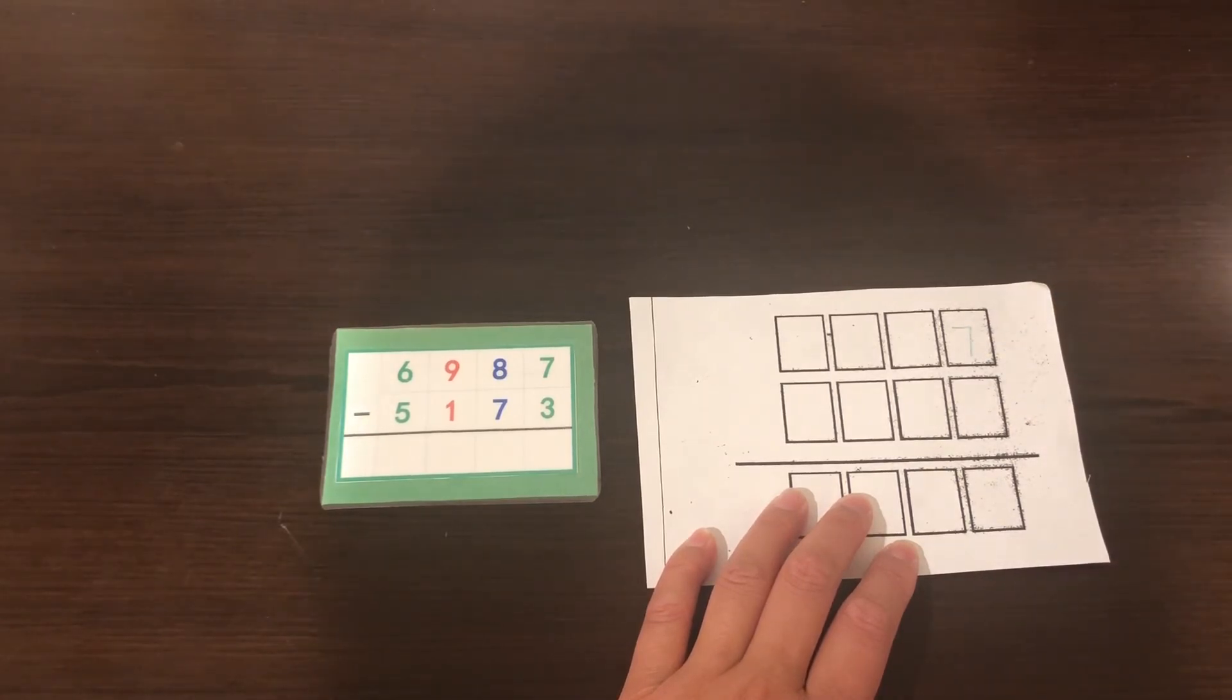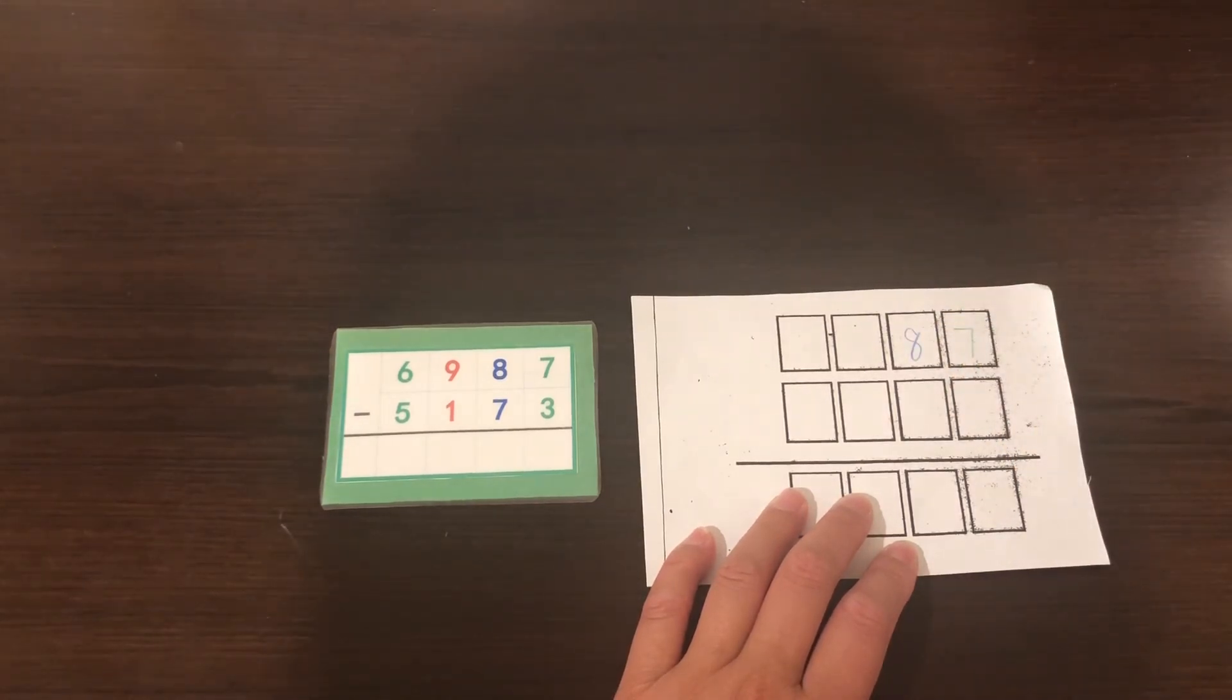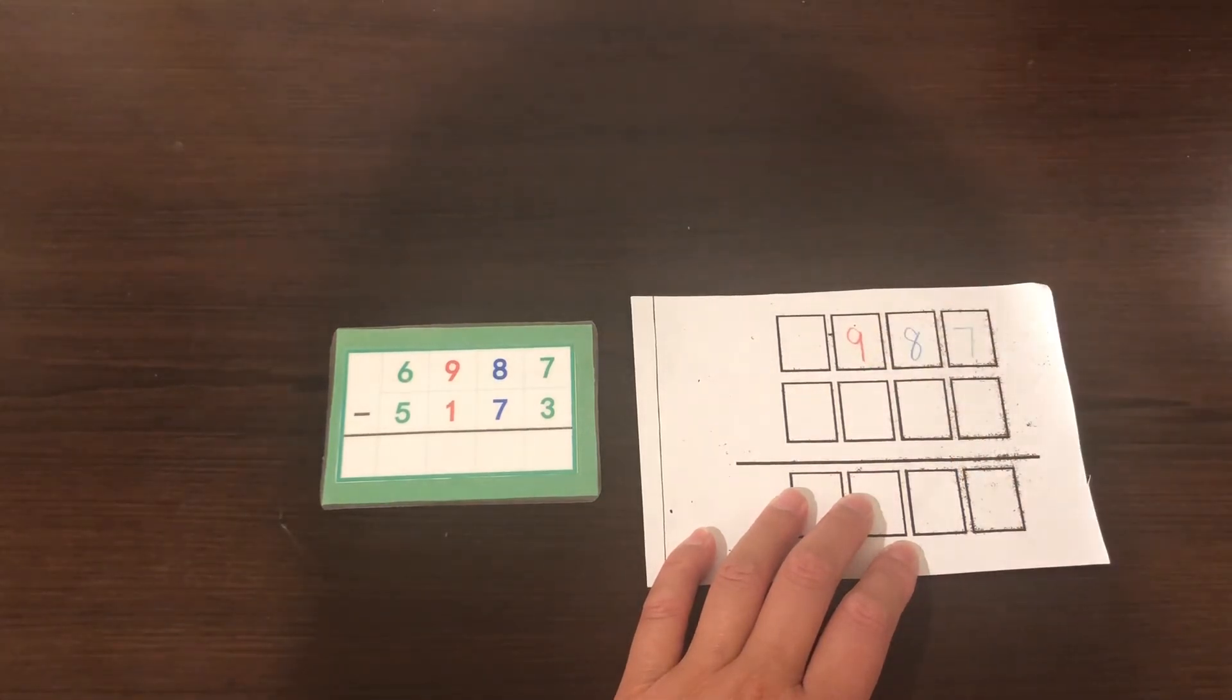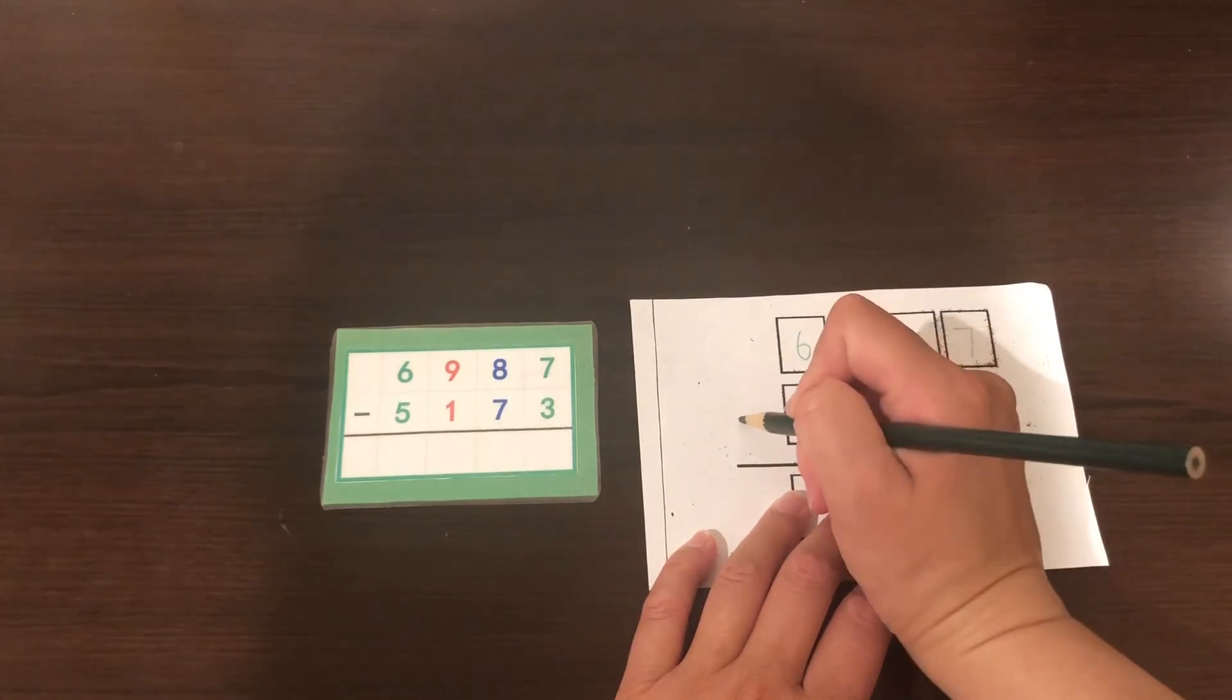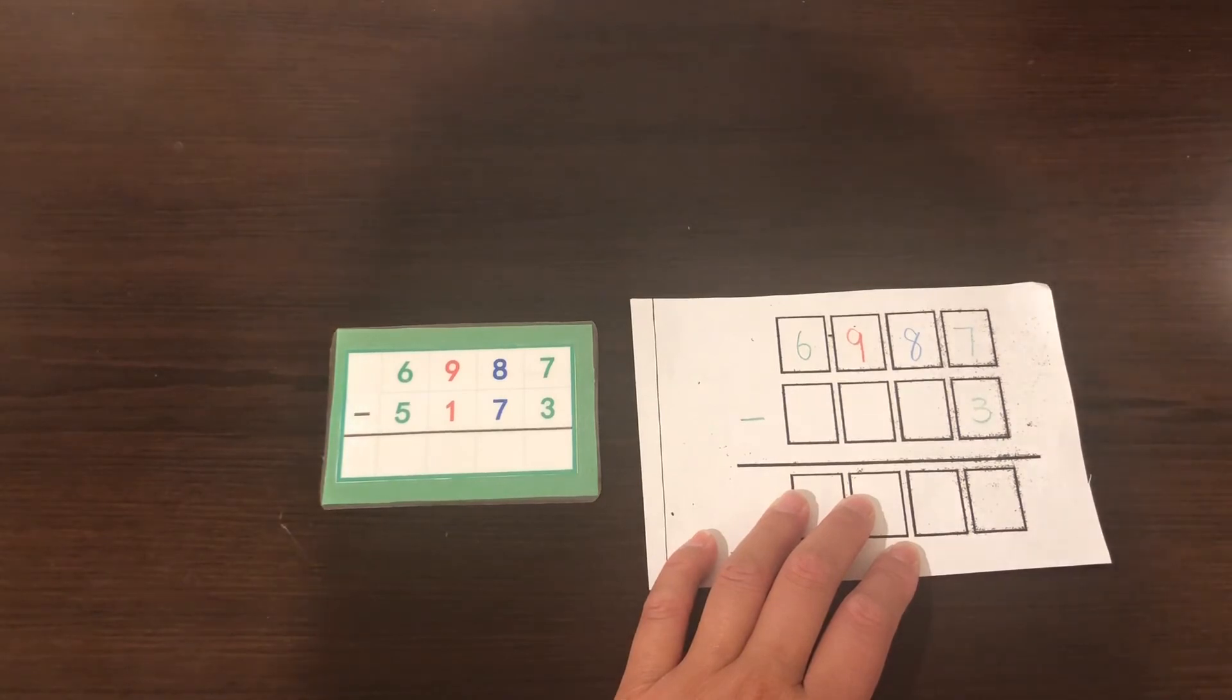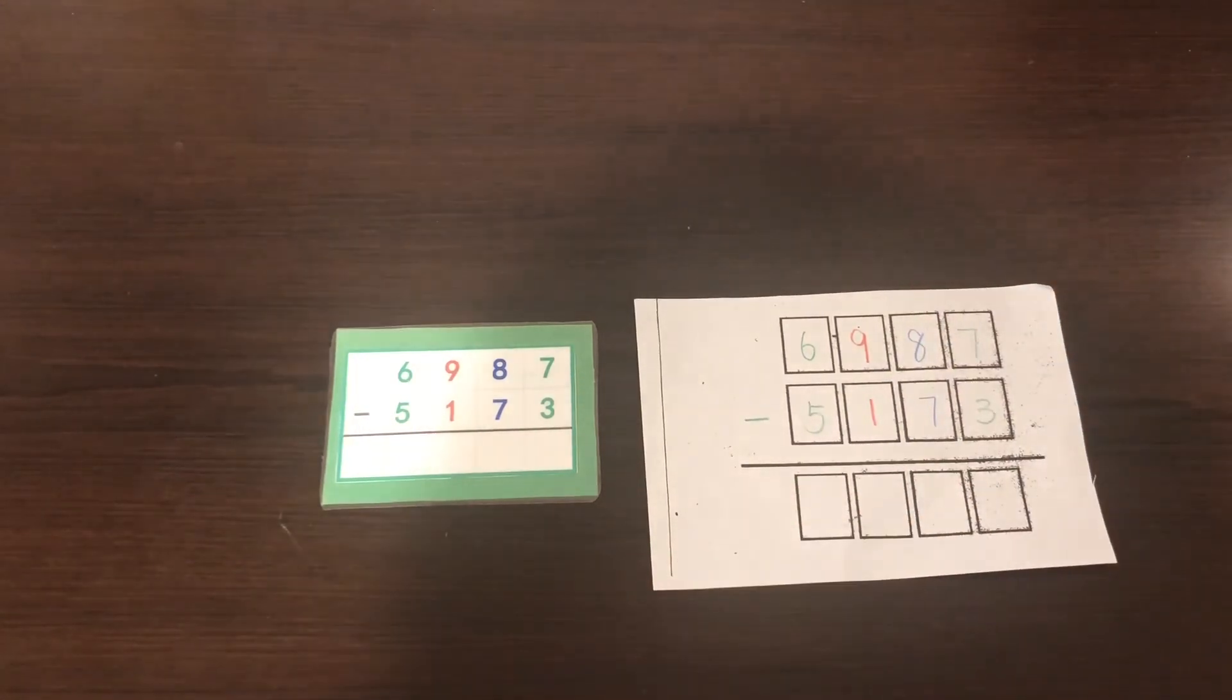Now let's write down. 7 units, 8 tens, 9 hundred, 6,000 minus 3 units, 7 tens, 1 hundred, 5,000 equals.